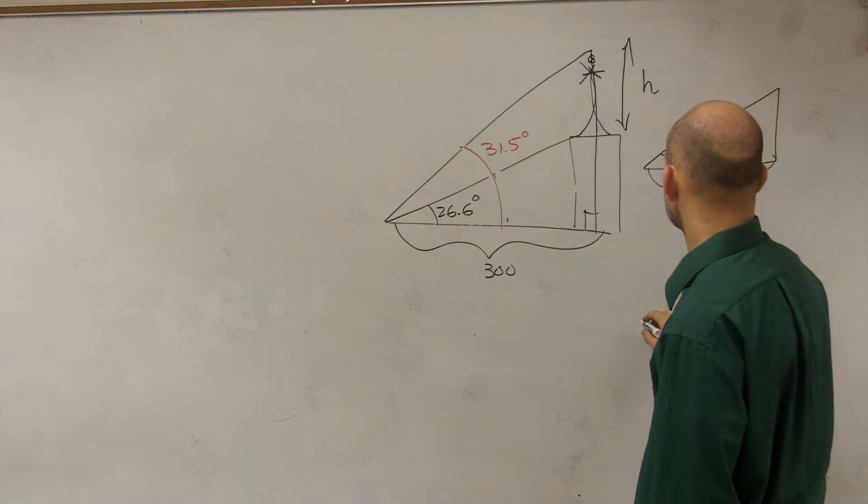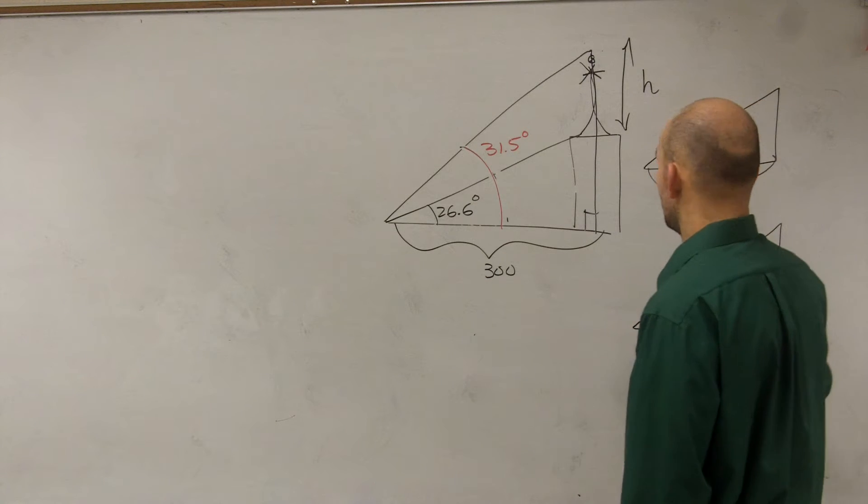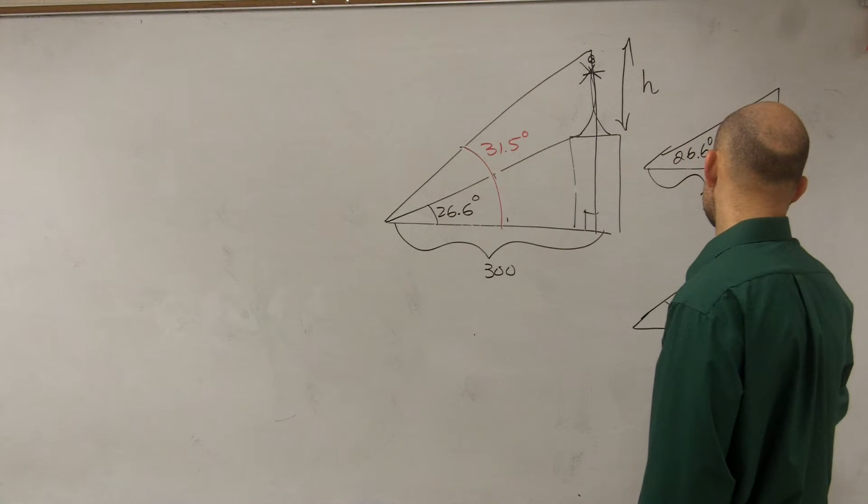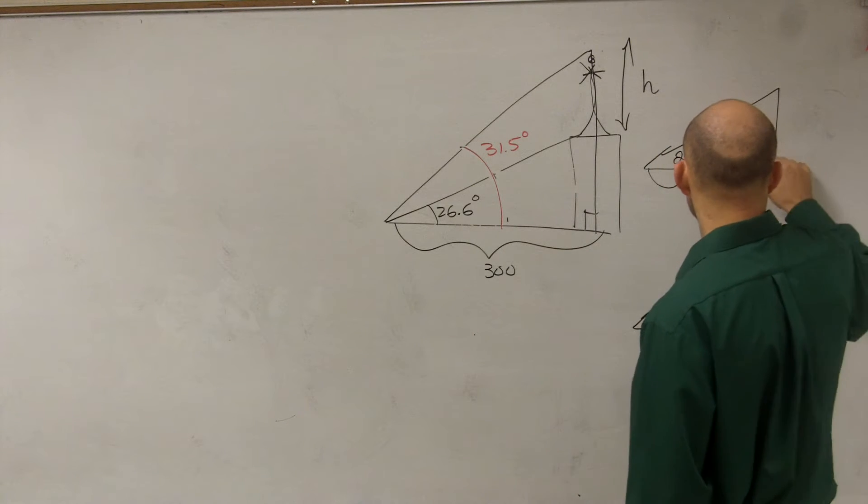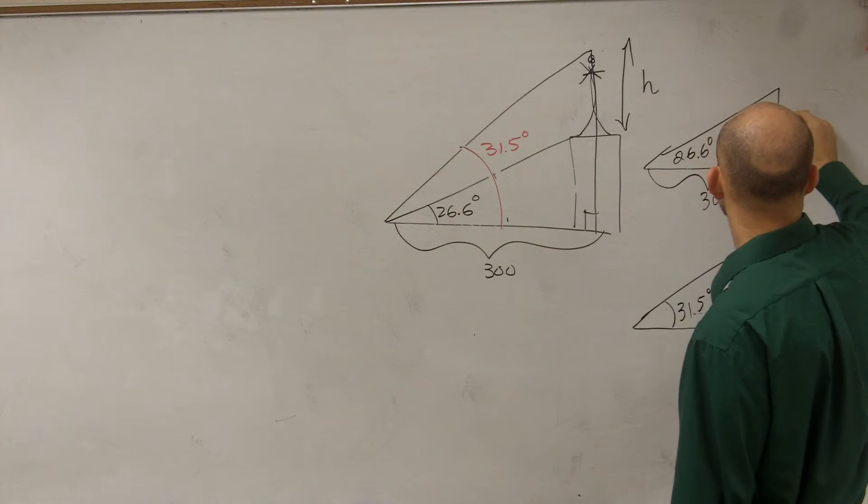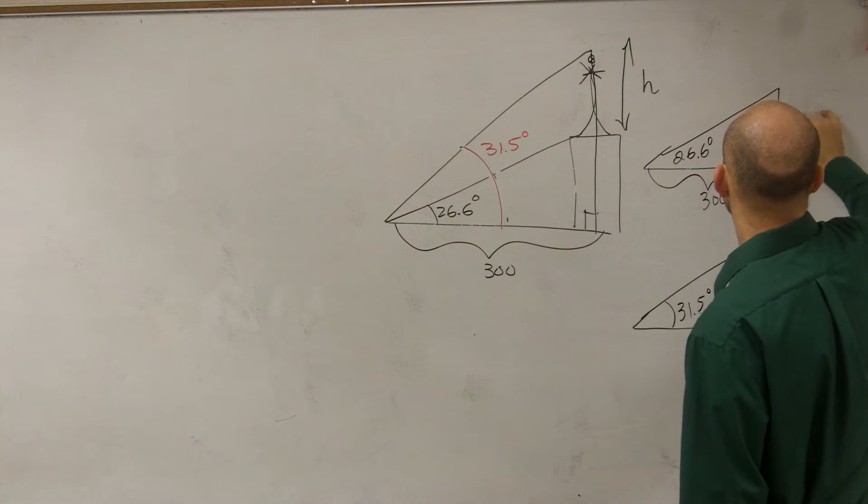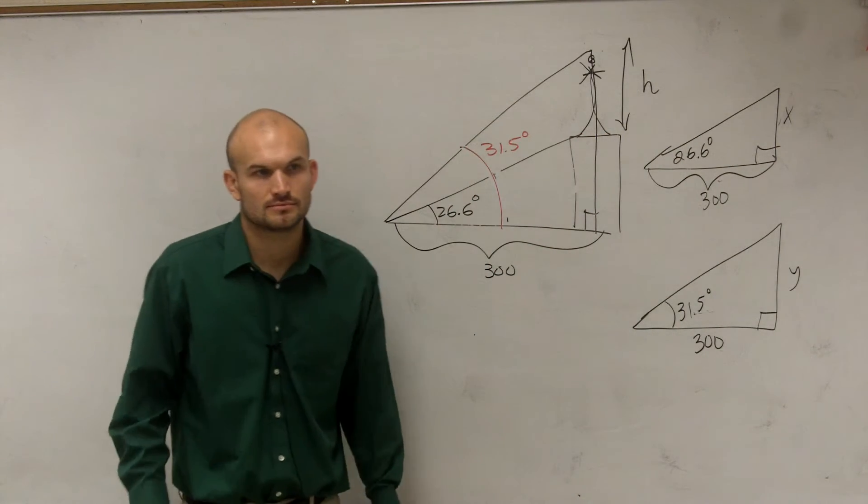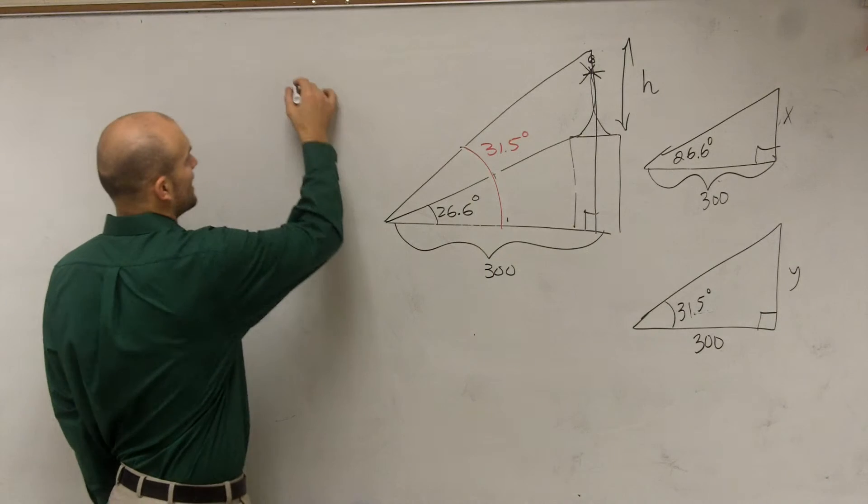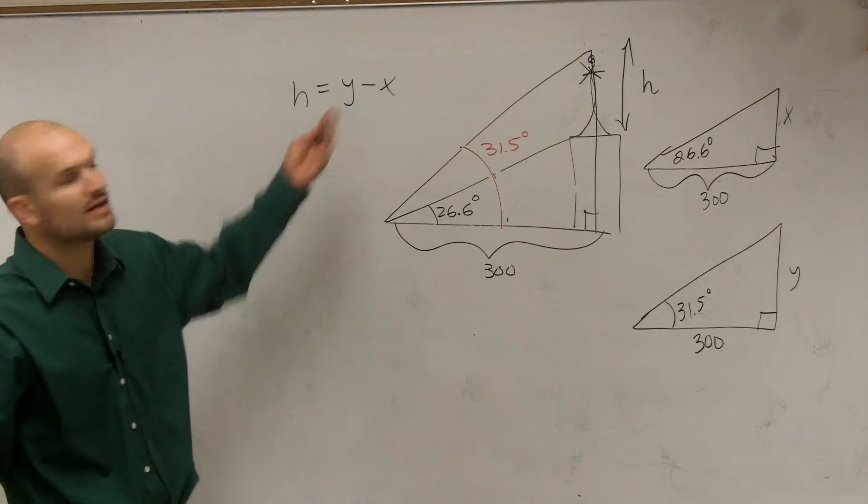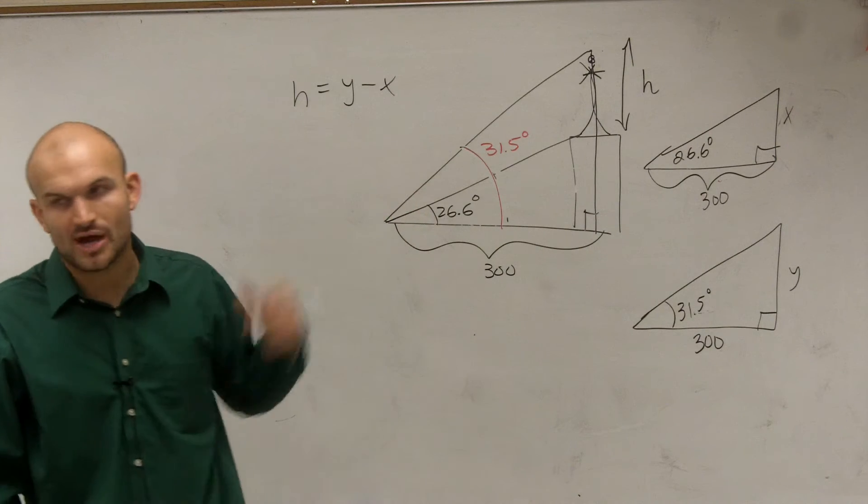Therefore, then I have another triangle where I have 31.5 degrees and this distance is 300. Using that information with the right angle, is it possible for me to determine what my, let's call them a and b, now let's do x and y. Is it possible for me to figure out that information? Yes, right? And then I can notice that h is going to equal y minus x, right? So all I need to do is just figure out what y and x are and then subtract them to find h.